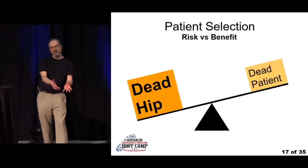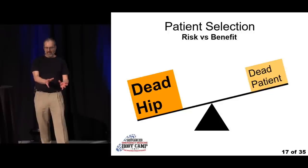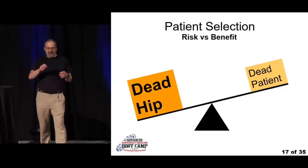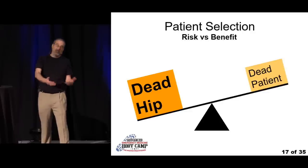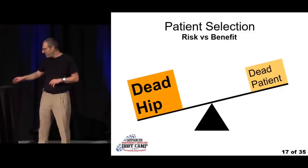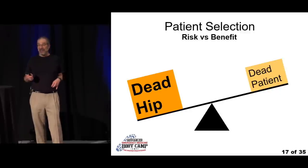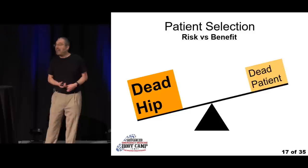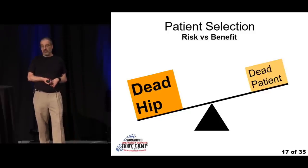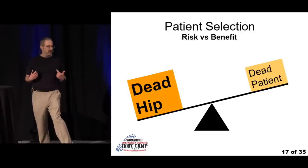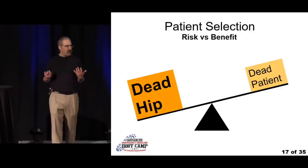In a polytrauma patient potentially bleeding to death, focusing on the hip may be the wrong priority — he might need to go straight to the OR or interventional radiology. There are no right or wrong answers, but think: what happens if I spend ten minutes doing this while he has life-threatening injuries? Sometimes we do cheat a little — put the hip back during RSI, or with a small dose of fentanyl — because the whole team wants to address both problems simultaneously.